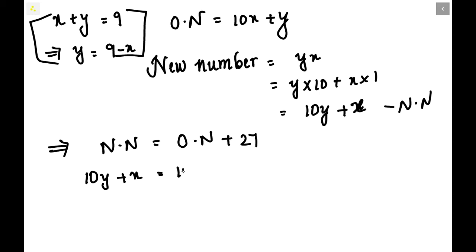The new number is 10y plus x, and the original number is 10x plus y, plus 27. I mentioned that substituting y with 9 minus x will be useful for further simplification. Since this chapter covers linear equations in one variable, we cannot solve with two variables. So in place of y we will substitute 9 minus x, making everything in one variable.